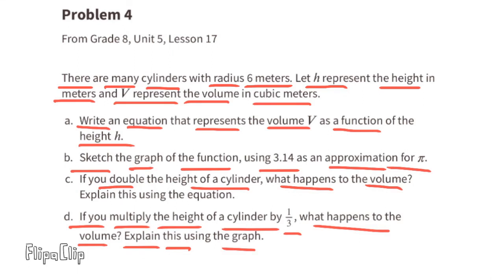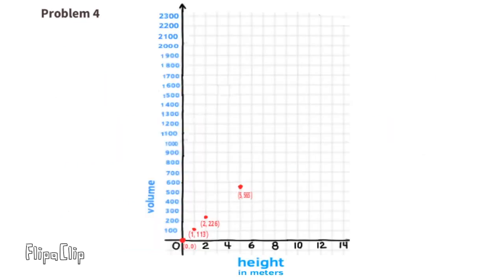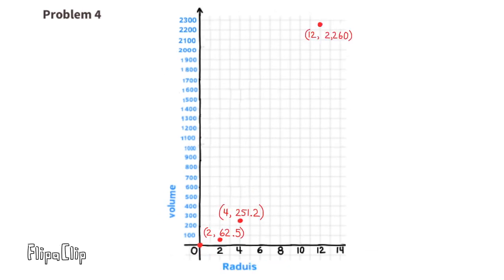Part d: If you multiply the height of a cylinder by 1 third, what happens to the volume? Explain this using the graph. Multiplying by 1 third is the same thing as dividing by 3. So you'd actually be making the height 3 times smaller, which means you'd be making the volume 3 times smaller. Let's use this graph as an example. You can see that there's a point that represents a cylinder that has a height of 12 meters, and there's a point that represents the volume of a cylinder that has a height of 4 meters. And of course, 4 is 3 times smaller than 12, and the volume of that cylinder is 3 times smaller than the taller cylinder.